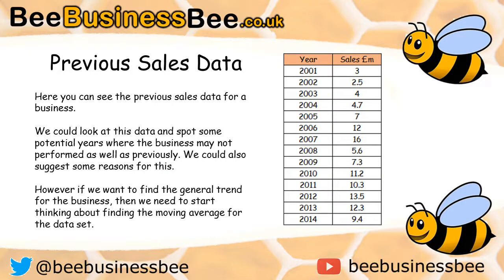Have a look at this data set. This is some previous sales data — sales figures all in £1,000,000 for different years, 2001 through to 2014. If you look at the data set and study it, you'll see that the data is all over the place. Some years they do better, some years they do worse. But what's the underlying trend? It's difficult to work out just from looking at the data. It doesn't really stand out to you.